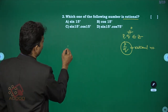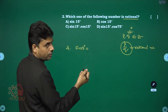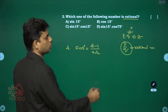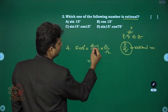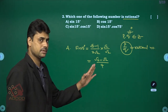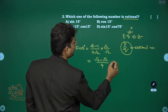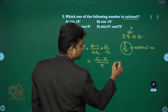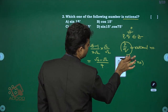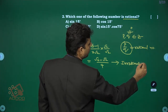Option A: sin 15° = (√3 - 1)/(2√2). Multiplying numerator and denominator by √2 gives (√6 - √2)/4. The numerator contains √6 - √2, which is irrational, so sin 15° is irrational.